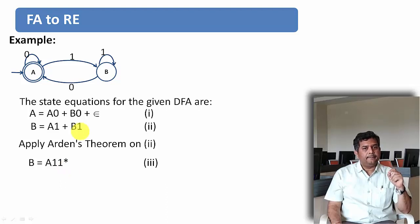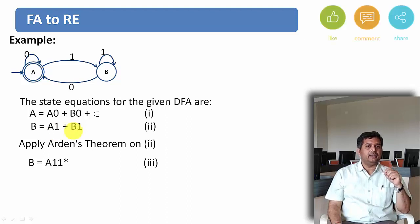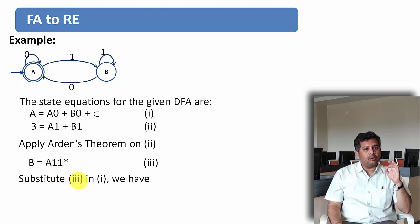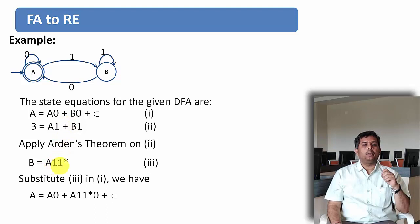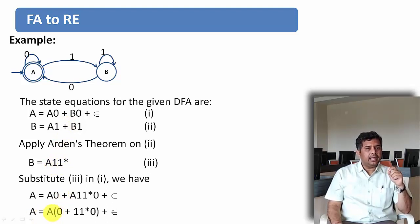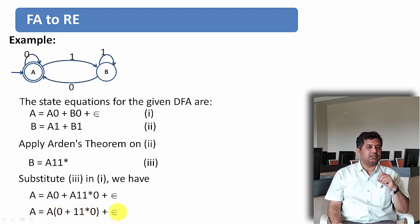Here P is 1, Q is A·1, and R is B. So applying Q·P star gives us B equal to A·1·1 star — let this be equation 3. Now substitute the value of equation 3 into equation 1. We will get: A equal to A·0 plus A·1·1 star·0 plus epsilon. Taking A common: A equal to A·(0 plus 1·1 star·0) plus epsilon.